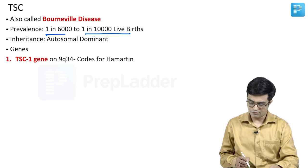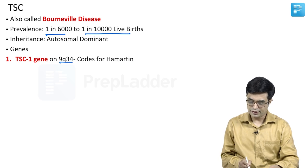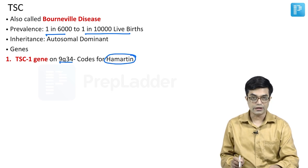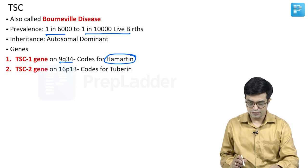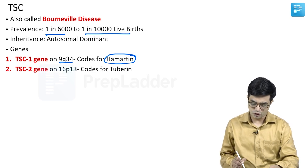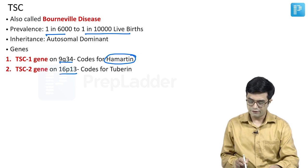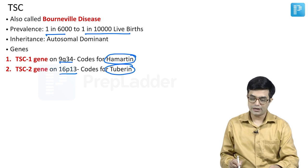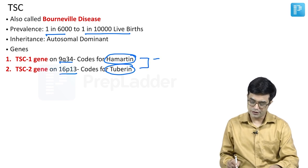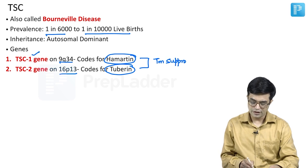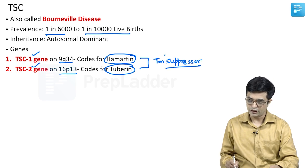The first gene is TSC1, present on the long arm of chromosome 9, which codes for a protein called hamartin. The second is TSC2, present on the short arm of chromosome 16, which codes for a protein called tuberin. Both hamartin and tuberin are tumor suppressor proteins — these are tumor suppressor genes and these proteins are tumor suppressor in nature.